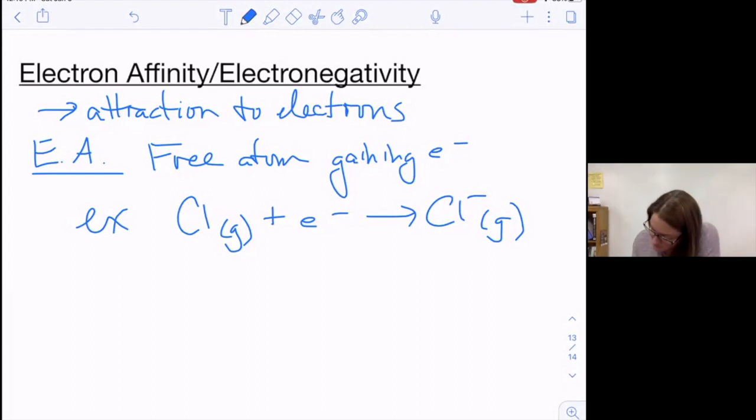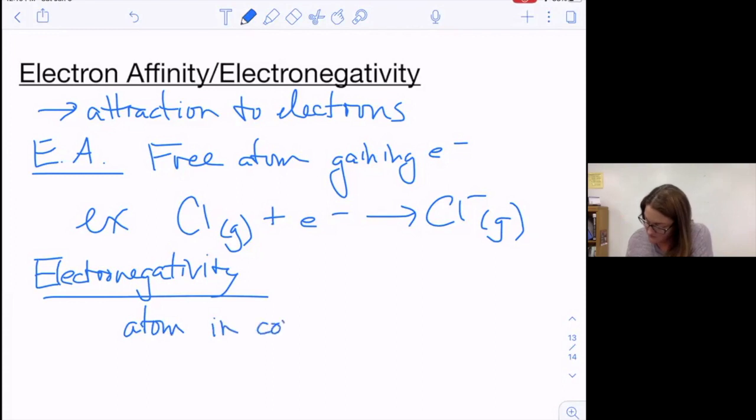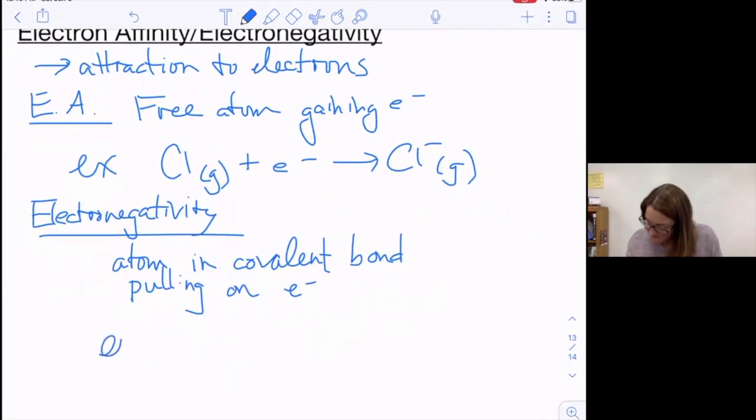Electronegativity is also atoms pulling on electrons, but it's an atom in a covalent bond pulling on electrons. For example, if I have something like HF and I have these two things bonded together, fluorine pulls on those electrons and hogs them a little bit. That's something we'll go over in a lot more detail when we look at bonding.